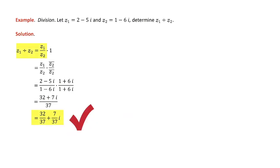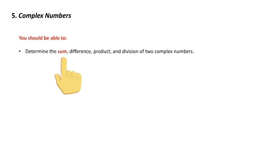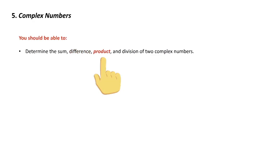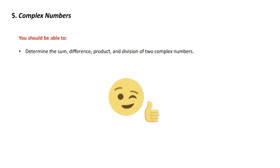Whenever you do division, whatever your numbers are, multiply top and bottom by the conjugate of the bottom — it's always going to work like that. From this section, go in your book and homework. You should be able to add, subtract, multiply, and perform division on complex numbers. If you can't do that, you've got problems. Practice the steps, and if you have any trouble, let me know — you can get this. Good luck.